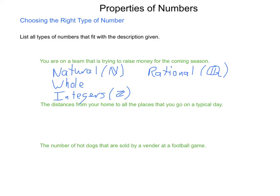Next, the distance from your home to all places that you go on a typical day. You could have natural number answers here. Couldn't really have the whole numbers because we're not adding zero. We could have the integers because we are including the naturals. And we could have the rational. But we can also have the irrational. Because we can go a distance that is, for instance, we could go pi miles to a friend's house. But we would never be able to express that as a perfect ratio of two integers.